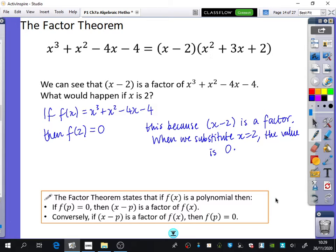So I've written down here that the factor theorem states that if f of x is a polynomial, like this one that we've got here, if when you substitute p into, p is just any number, into the function, and you get 0, then x minus p is a factor of f of x.